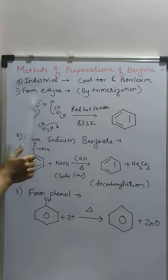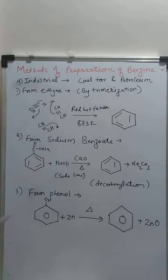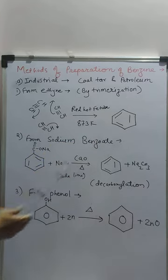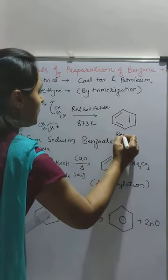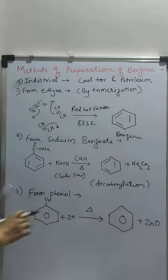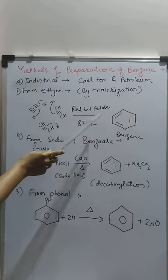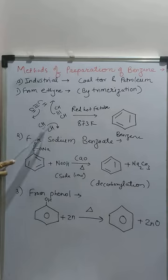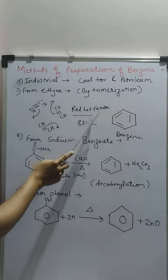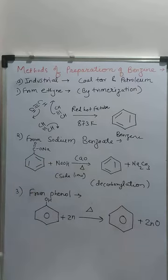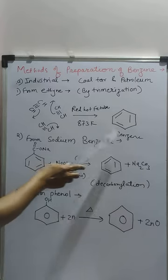The next method of preparation of benzene is from ethyne. This method is called trimerization. By trimerization we can prepare benzene from ethyne. When ethyne is passed over a red hot iron tube at 873 Kelvin, benzene is formed.